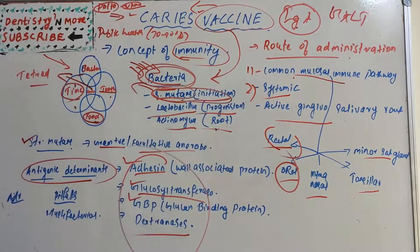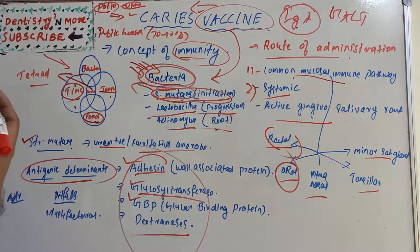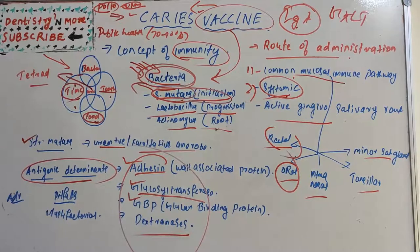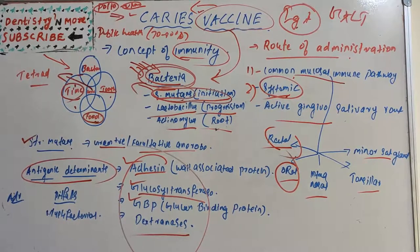The systemic route successfully elicits IgG, IgM, and IgA antibodies. The active gingival-salivary route uses the gingival crevicular fluid as a route of administration in order to limit potential side effects and localize the immune response.